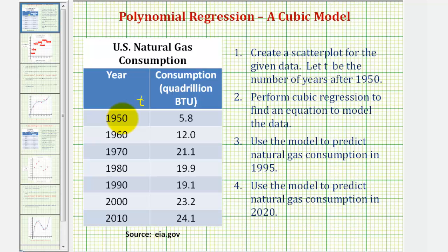So for 1950 though, we're going to use T equals zero. For 1960, we'll use T equals 10 since 1960 is 10 years after 1950. For 1970, we'll use 20, and so on.